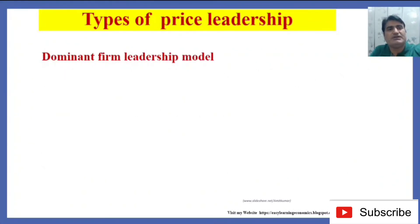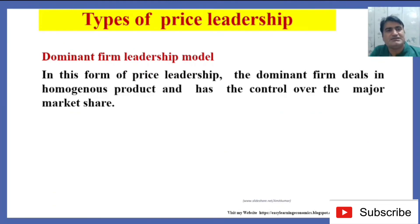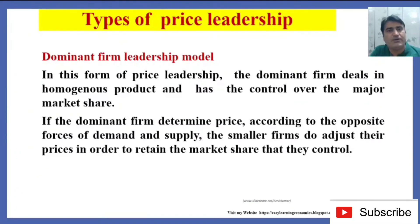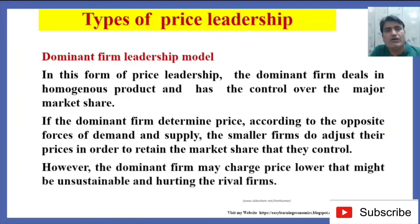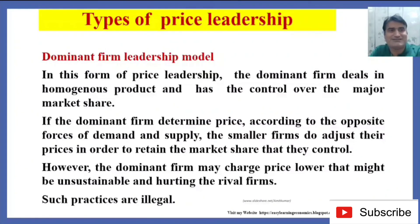Dominant Firm Leadership Model: In this form of price leadership, the dominant firm deals in a homogenous product and has control over a major market share. If the dominant firm determines price according to the forces of demand and supply, the smaller firms still adjust their prices in order to retain the market share they control. However, the dominant firm may charge prices so low that it becomes unsustainable and hurts rival firms — such practices are illegal.